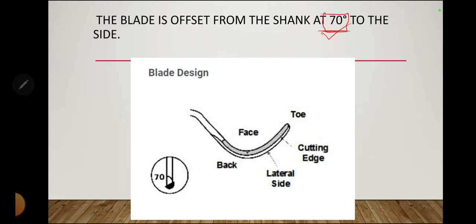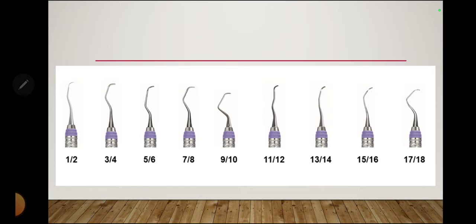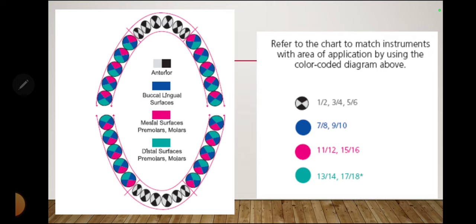Now, looking at the various Gracey curets, you can notice the difference in shank designs. The standard Gracey curets range from 1/2 to 17/18. Based on shank variations, the Gracey curets can be used on different tooth surfaces.